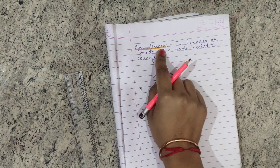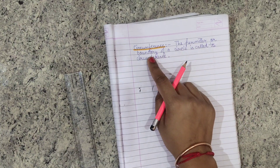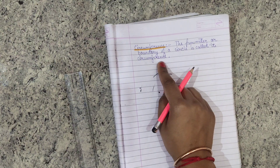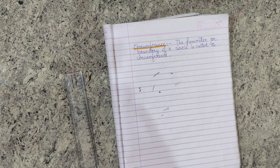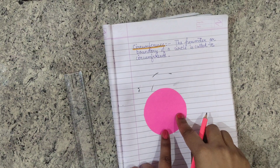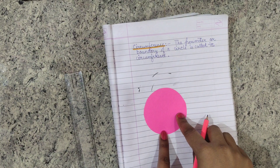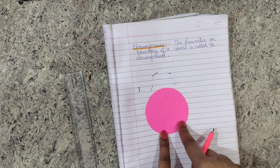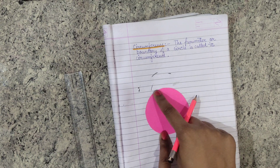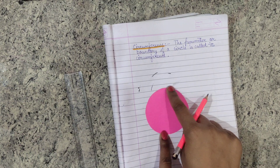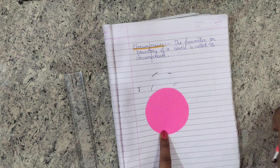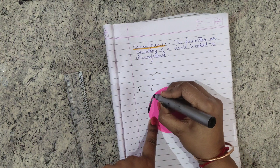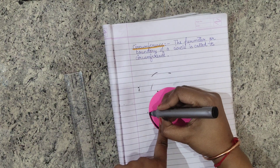Circumference: The perimeter or boundary of a circle is called its circumference. This boundary of the shape is the circumference of the circle.